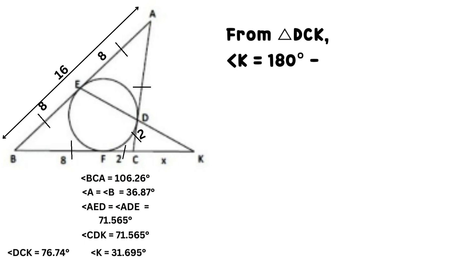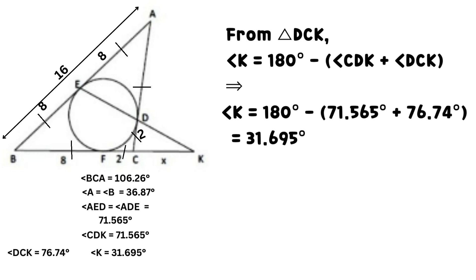From triangle DCK, angle K equals 180 degrees minus the sum of angle CDK and angle DCK. This implies that angle K equals 31.695 degrees after substitution and simplification of values.